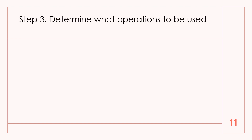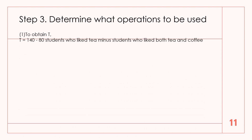Step 3: Determine what operations to be used. To obtain T, the set of students who like tea only: T equals 140 minus 80 — students who like tea minus students who like both tea and coffee — so T equals 60. There are 60 students who like tea only.